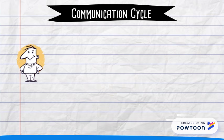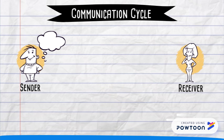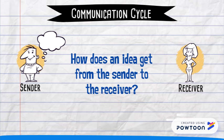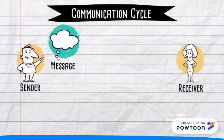To begin, we always start with the sender, who has some kind of idea that he is trying to get to a receiver. So that begs the question: how does an idea get from the sender to the receiver? And for our sender here, he has a very specific idea in mind — he is in love, and he can't wait to communicate it.